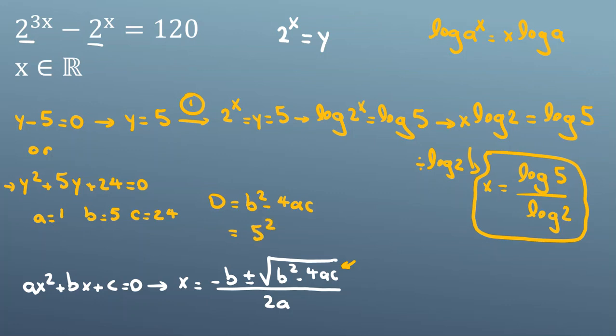It will be 5^2 - 4(1)(24) = 25 - 96, which is less than zero. When the discriminant is less than zero, we don't have any real roots for y. Therefore, our only answer is x = log(5)/log(2).